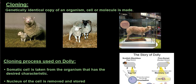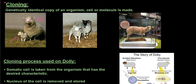Cloning is probably the most sci-fi topic when studying life sciences. Cloning is when a genetically identical copy of an organism, cell, or molecule is made. The most famous clone that has ever existed is Dolly the sheep. Dolly was the first mammal to be cloned from an adult cell, which is why she is so famous.